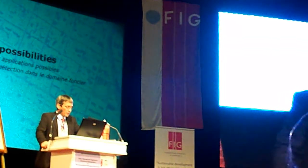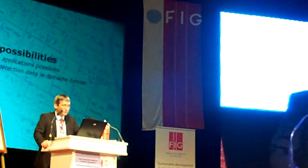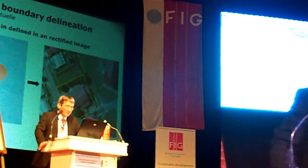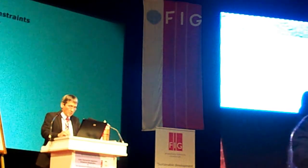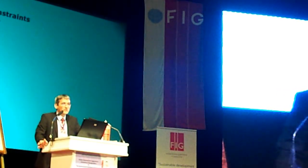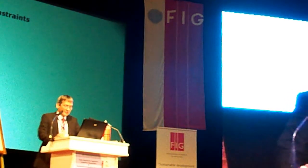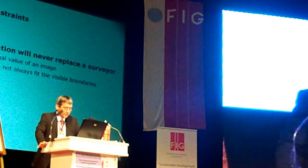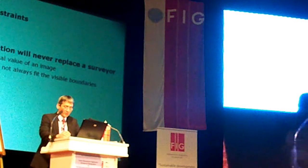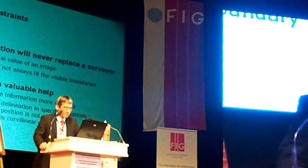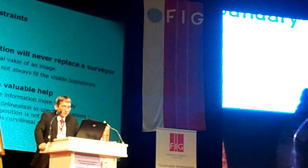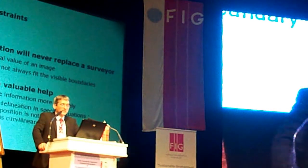Some technological innovations are offering new possibilities in land management. The first example is virtual delineation, which means the boundary is defined in a rectified image and not only on the ground. The use of remote sensing for virtual delineation has two main constraints: location accuracy and image quality, which is not only image resolution. Virtual delineation will never replace a surveyor because the legal value of images is not always clear and legal boundaries do not always match visible boundaries. However, this kind of product can provide valuable help to the surveyor to save and share information more securely, and to replace traditional delineation in specific situations.